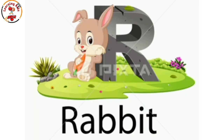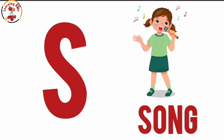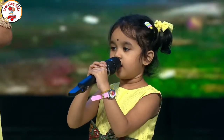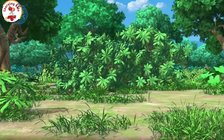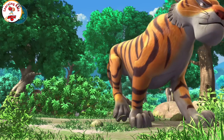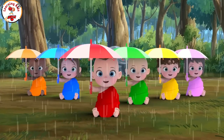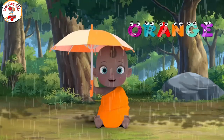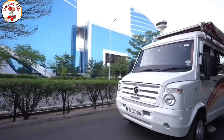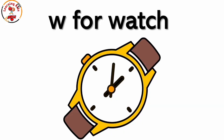R for rabbit. T for tiger. V for van. W for watch.